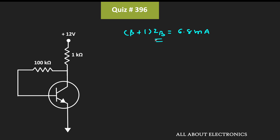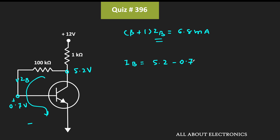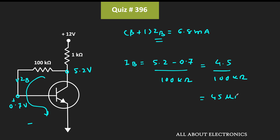To find the base current, let us apply KVL in this loop. The voltage at this node is equal to 5.2 volt, while the voltage at this node is equal to 0.7 volt, which is VBE, and this current is the base current. So the base current IB is equal to 5.2 volt minus 0.7 volt divided by 100 kilo-ohm, which is equal to 4.5 divided by 100 kilo-ohm, equal to 45 micro-ampere.